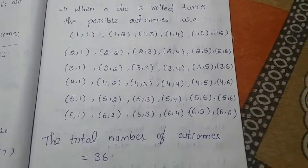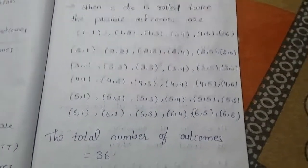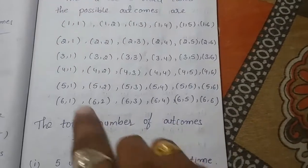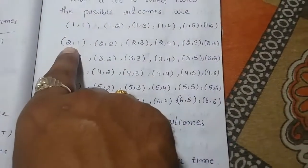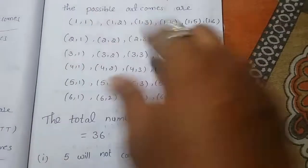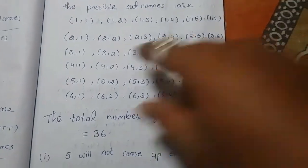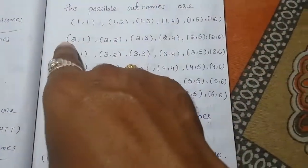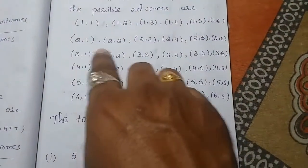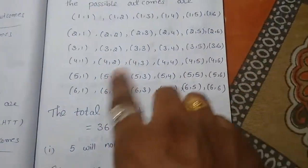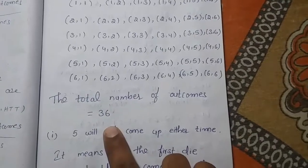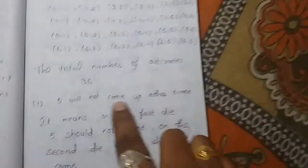These are all the possible outcomes when a die is rolled twice. For example, on the first roll it may appear 2 and on the second roll it may appear 1, and so on. The total number of outcomes is 36.